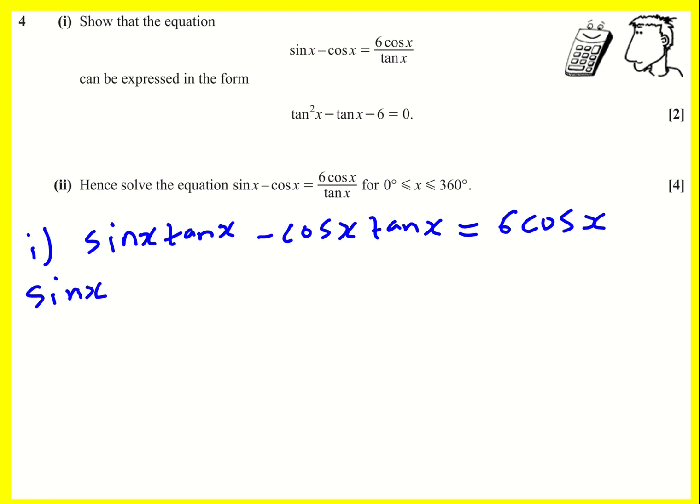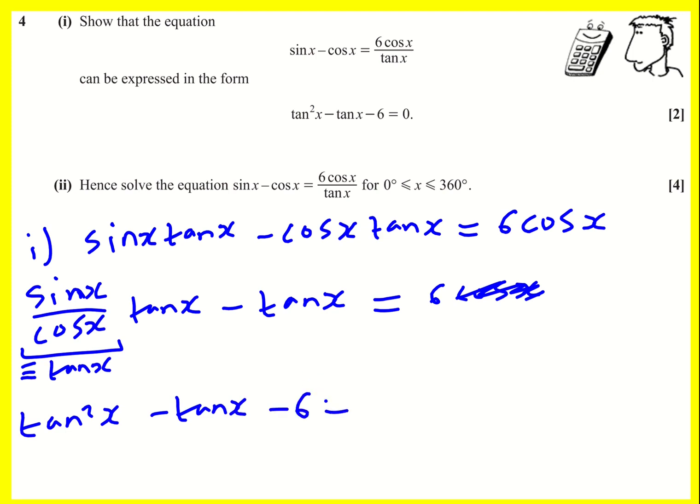And then I'm going to get sine x over cos x tan x. And then the next expression, the cos x terms are going to cancel out. And this is also going to happen for the 6 cos x. And finally, we can use the fact that sine x over cos x is identical to tan x. We can write down that tan squared x minus tan x minus 6 equals 0 as required.